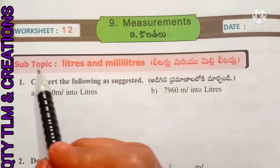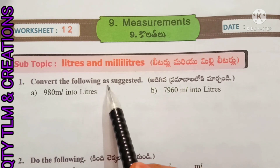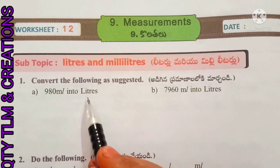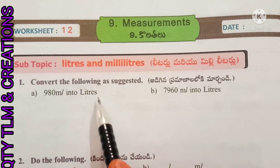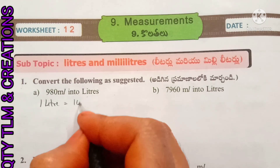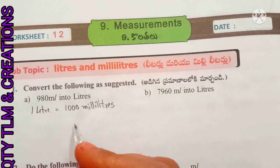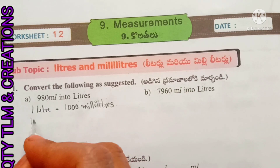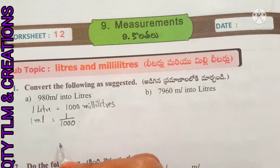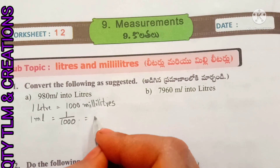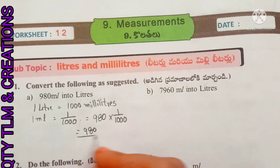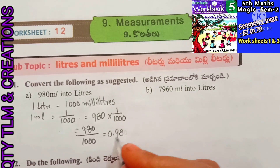Worksheet number 12, subtopic: liters and milliliters. First: convert the following as suggested. (a) 980 milliliters into liters. When converting milliliters into liters, we divide by 1000, because 1 liter equals 1000 milliliters — so 1 milliliter equals 1/1000 of a liter. Therefore 980 × (1/1000) = 980 ÷ 1000 = 0.98 liters.